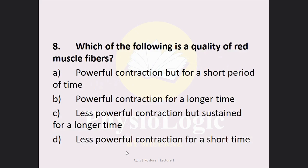Regarding red muscle fibers: Which of the following is the quality of red muscle fibers? Option A: powerful contraction but for a short period of time, Option B: powerful contraction for a longer period of time, Option C: less powerful contraction but sustained for a longer time, Option D: less powerful contraction but for a short time. The correct answer is Option C — less powerful contraction but can be sustained for a longer period of time.